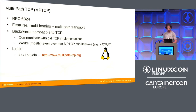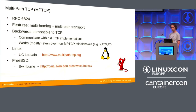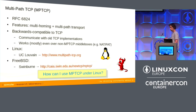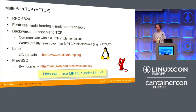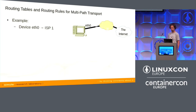There's a very nice MPTCP implementation under Linux from Université catholique de Louvain in Belgium with a quite active community. Unfortunately, you need to compile your own kernel as it's not yet in the mainline kernel. For FreeBSD, Swinburne University in Melbourne has written an MPTCP implementation. Since this is a Linux conference, your question is probably: how can I use MPTCP under Linux? First you need to think a little about routing.